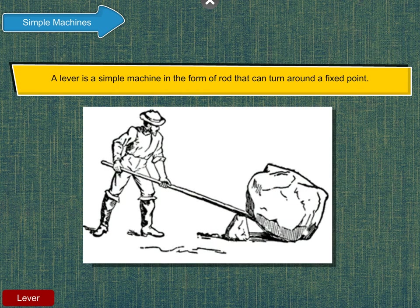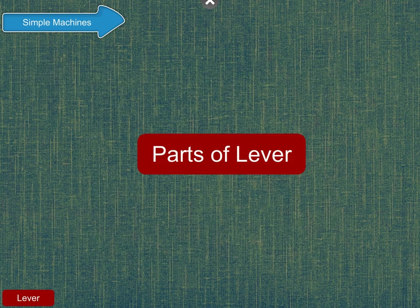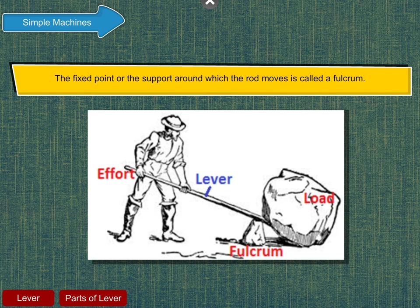A lever is a simple machine in the form of a rod that can turn around a fixed point. The fixed point or the support around which the rod moves is called a fulcrum.